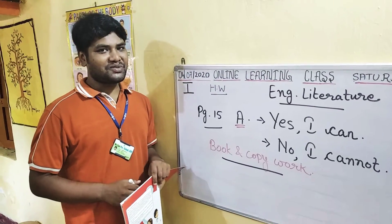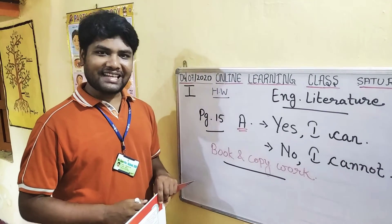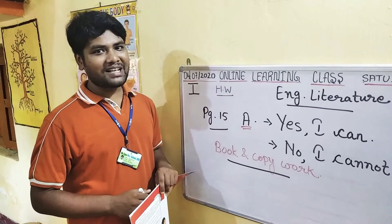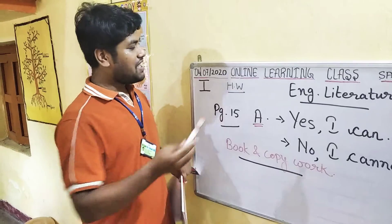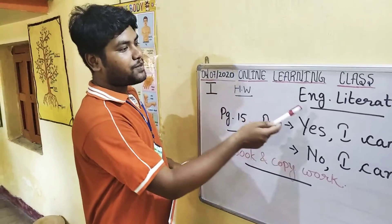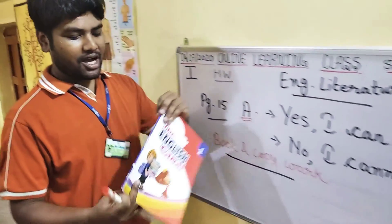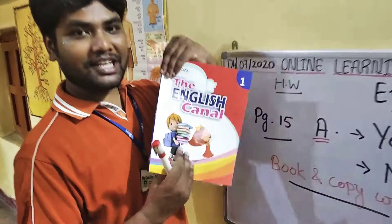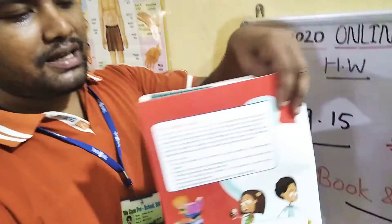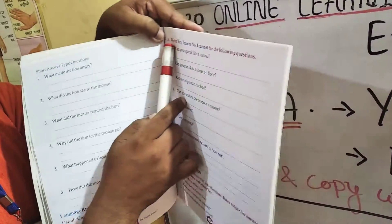Hello kids, this is VK Preschool C&E Online Class. Your Shubhasar is back. This is for Class 1. Subject is English Literature. Take out your English Channel book, page number 15. A number exercise.